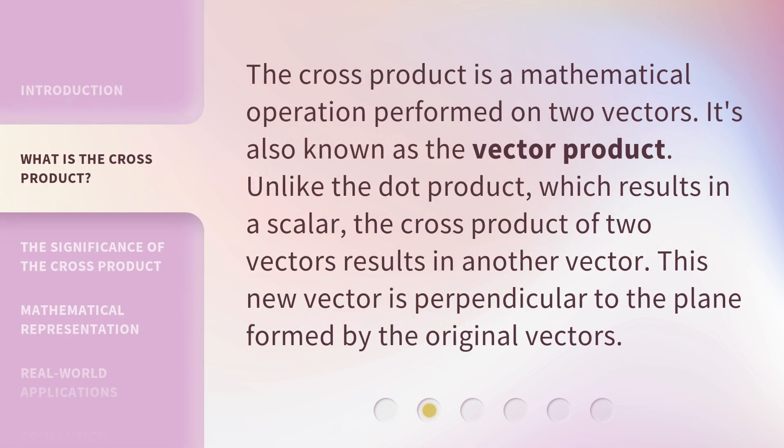The cross-product is a mathematical operation performed on two vectors. It's also known as the vector product. Unlike the dot product, which results in a scalar, the cross-product of two vectors results in another vector. This new vector is perpendicular to the plane formed by the original vectors.